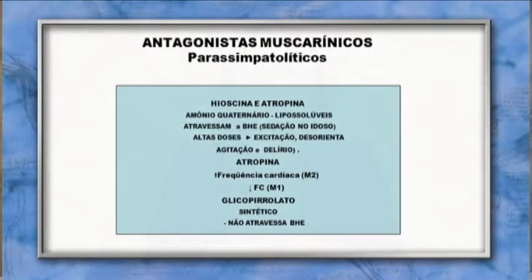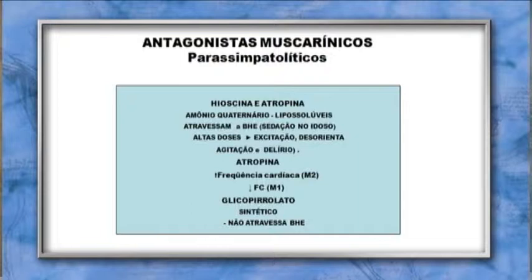Entre os antagonistas muscarínicos, é importante lembrar que tanto a escopolamina quanto a atropina são bases terciárias lipossolúveis, por isso atravessam a barreira hematoencefálica, levando a sedação no idoso e, em altas doses, a excitação, desorientação, agitação e delírio. A ação da atropina sobre a frequência cardíaca pode ocorrer em dois receptores: em baixas doses, diminui a frequência cardíaca (age em M1); em doses maiores, aumenta a frequência (age em M2). O glicopirrolato é um antagonista muscarínico sintético que não atravessa a barreira hematoencefálica.